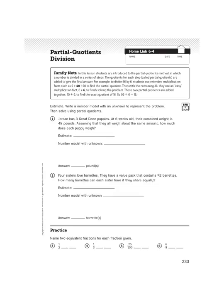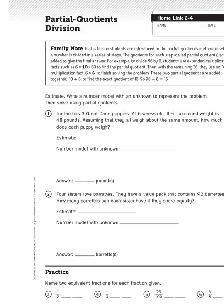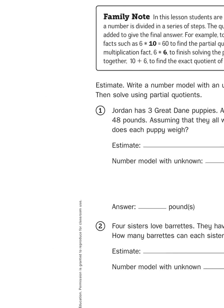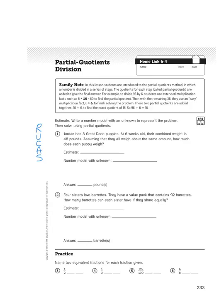I'm going to use the RUCKUS strategy for coming up with my answer. RUCKUS stands for: read multiple times, underline the question, circle the important information, come up with an action plan, and then solve. Now I'm going to reread this problem, and as I do, I'm going to underline the question and circle the important information.